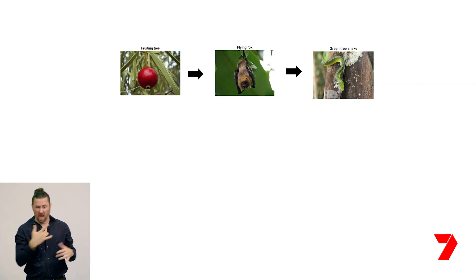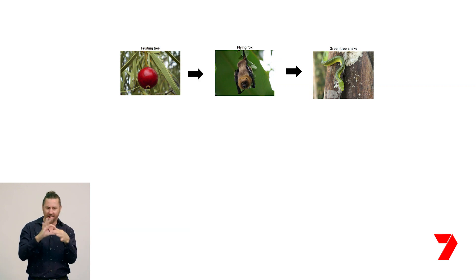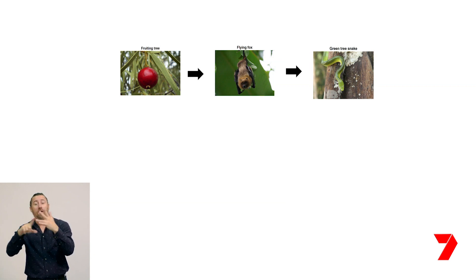Cassowaries eat rainforest fruits and excrete the seeds as they move around the forest. From these seeds, new trees can grow. Some seeds even require the digestive processes of the cassowary to sprout. The cassowary has an important relationship with trees in the rainforest. Today we're going to explore the different roles that organisms can have in a relationship. These images show some organisms that live here, organised by their feeding relationships, and we can see two different sets of relationships that we call chains. In the first chain, snakes eat flying foxes to survive, and flying foxes eat the fruit from rainforest trees.